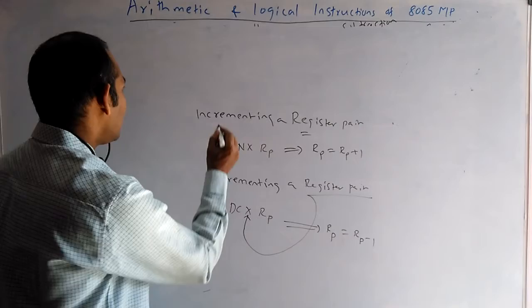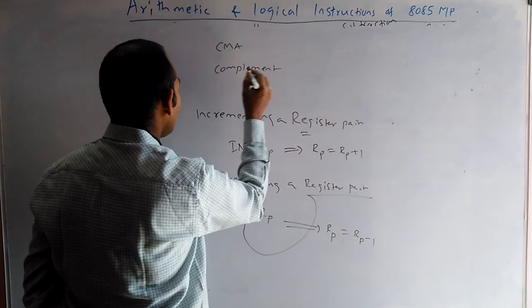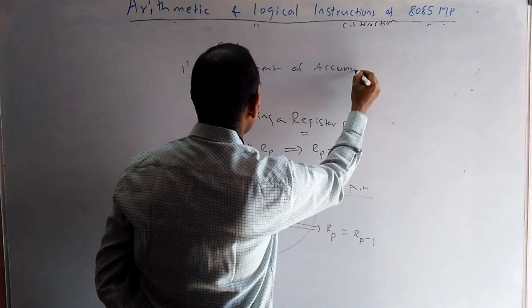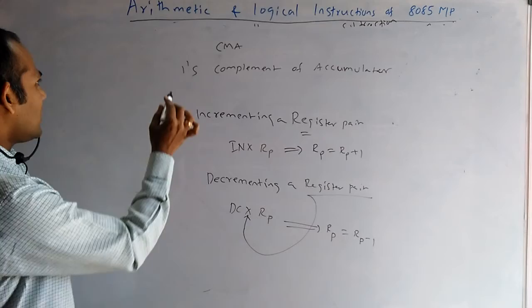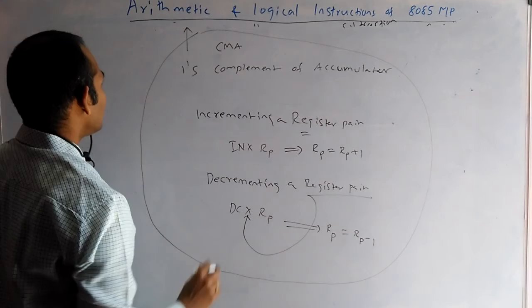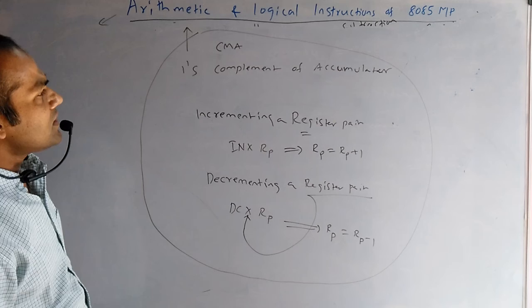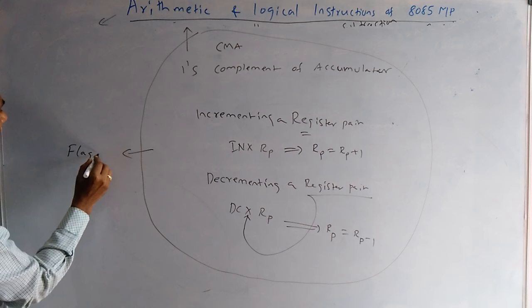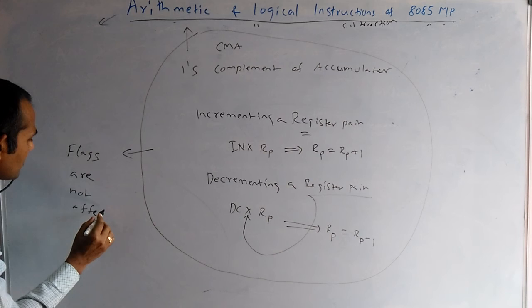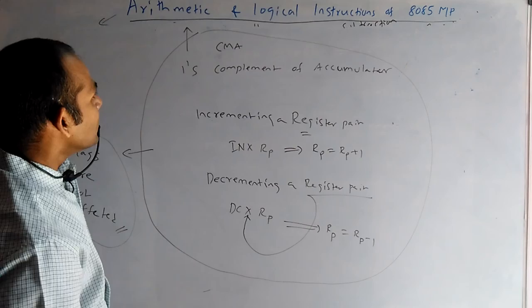One more instruction is CMA — Complement Accumulator, which performs the one's complement of the accumulator. About INX, DCX, and CMA: even though these are in the mathematical and logical instruction group, the flags are not affected at all by these instructions. There is no change in the flags after these three instructions.